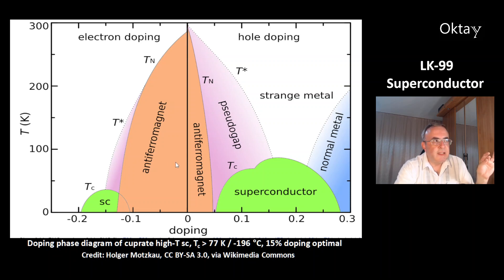And you can see at the right, doping with holes. At the left, doping with electrons. And what is interesting is, in both cases, you get the optimal result of the highest critical temperature at about 15% doping.